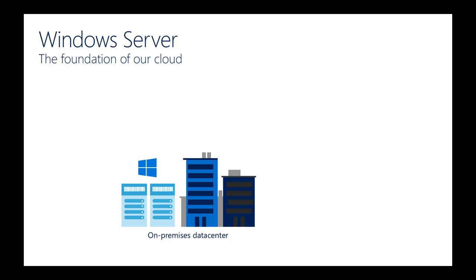Every so often I talk with companies around the world and one will say, 'Jeff, I have a workload that has to run and can only run in a German data center on German soil by German citizens — are you going to try and push me up to your public cloud?' And my answer is absolutely not. This has nothing to do with technology. It has everything to do with data sovereignty and compliance and regulatory. I'm not going to tell you how to run your business or where you should be running. If you want to run everything on-premises because you think you need that level of control, or have compliance or regulatory reasons, you should do that.